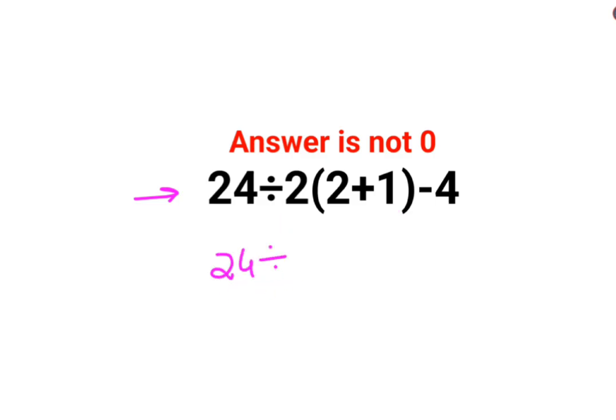24 divided by 2 multiplied by 3—plus 2 plus 1 is 3—minus 4. Now this is 24 divided by 6 minus 4, this is 4 minus 4, answer is 0. At this step a lot of people made the mistake.